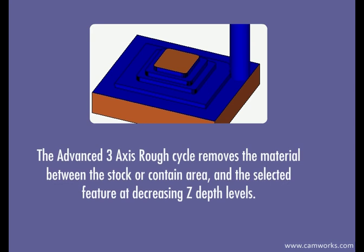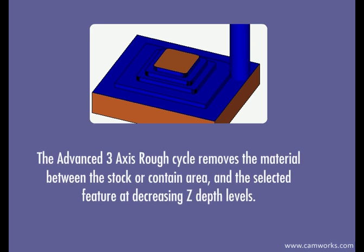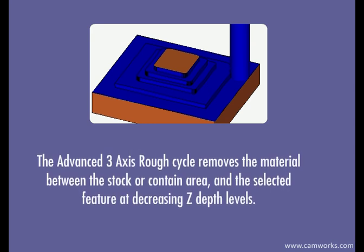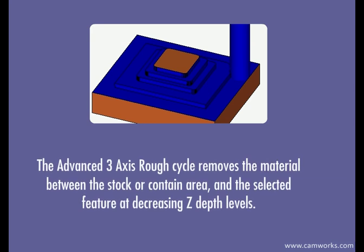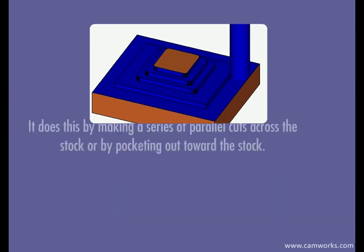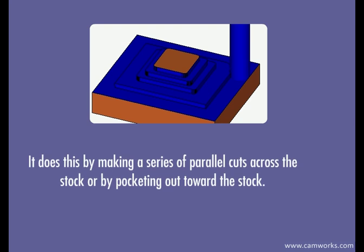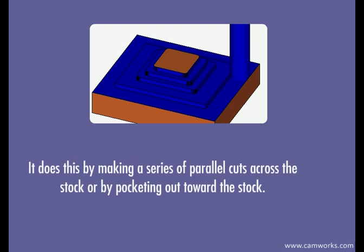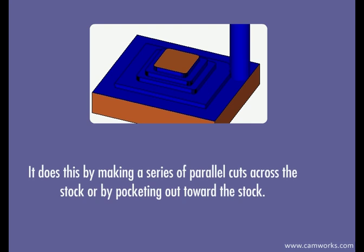The advanced three-axis rough cycle removes the material between the stock or contain area and the selected feature at decreasing Z-depth levels. It does this by making a series of parallel cuts across the stock or by pocketing out toward the stock.